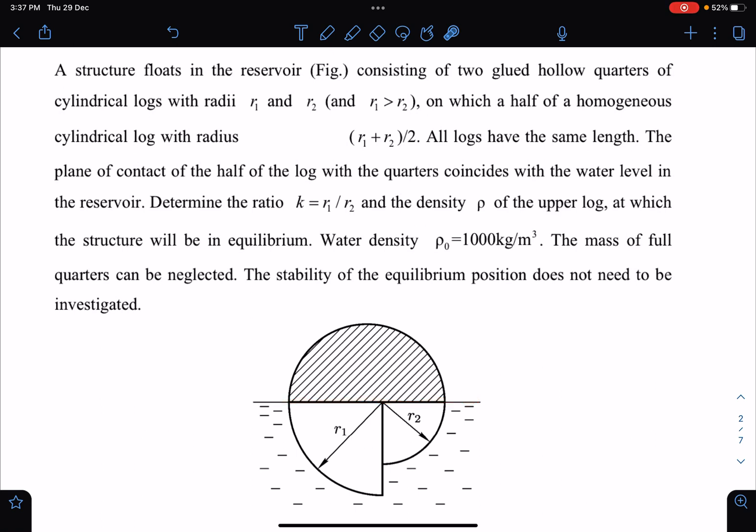Determine the ratio k = r1/r2 and the density ρ of the upper log at which the structure will be in equilibrium. Water density ρ_w = 1000 kg/m³ is given. The mass of full quarters can be neglected. The stability of equilibrium position does not need to be investigated.